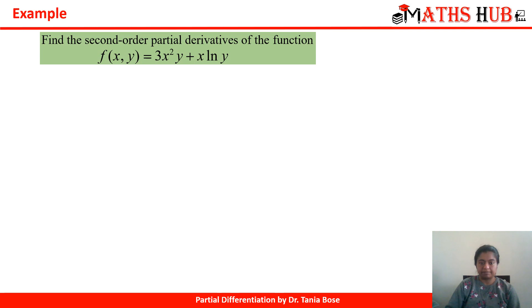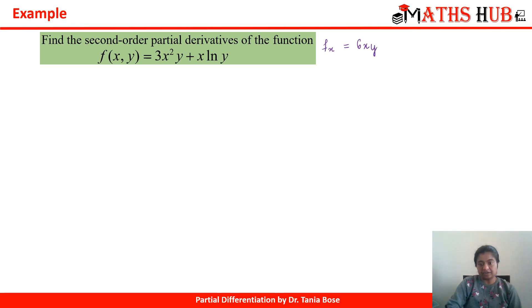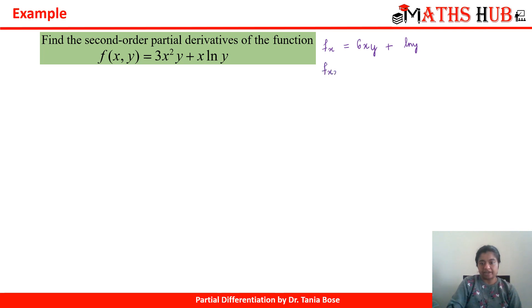Let us take one example. Find the second order partial derivatives of f(x, y) = 3x²y + x·log(y). First, let us calculate fx — the derivative with respect to x keeping y constant. The derivative of 3x² gives 6x, and we keep y constant. In the second term, log y is constant and the derivative of x is 1. So fx = 6xy + log y. Now let us calculate f of xx.